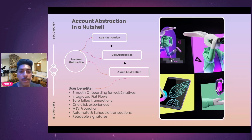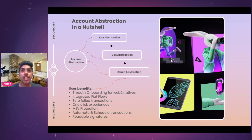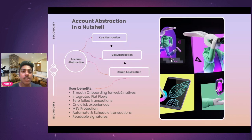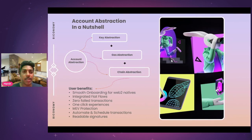The third is chain abstraction. Basically, the future is going to be a multi-chain future, and users shouldn't be worried about whether they're interacting with Polygon, Solana, Neo, or some other chain. They should be able to use Web3 dApps just like the flow of Web2, without any interruptions, assumptions, or tension about which chain they're dealing with.